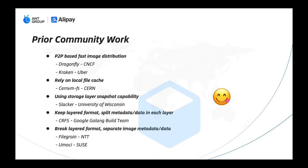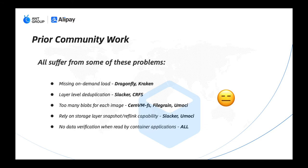Unfortunately, all of them are more or less imperfect and have many problems. Dragonfly and Kraken are missing on-demand load. Slacker and CRFS only have layer-level deduplication. StargZ, FileGz, and eStargz have too many blob data for each image. Slacker and eStargz really depend on storage layer snapshot and reflink capability. All of them have no data verification when read by the container application.